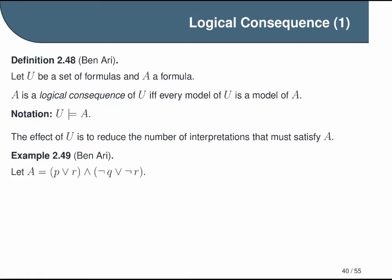So let A be this formula, P or R, and not Q or not R. And let U be this very simple set of formulas that includes P and the formula not Q by itself. So what we want to know is, is A a logical consequence of U? This would be a good place to pause and reflect if you want to try to answer this on your own.